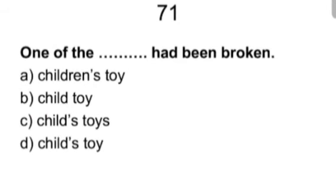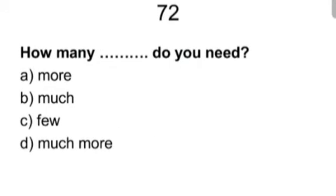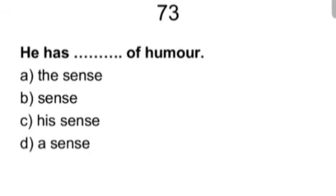Seventy one. One of the blank had been broken. Children's toy, child toy, child's toys, child's toy. Child's toys. Since we are using one of the, so we expect the plural form of toy. Next, seventy two. How many blank you need? Do you need? More, much, few, much more. Answer is more. How many more do you need? Next one, seventy three. He has blank of humor. The sense, sense, his sense, a sense. Answer is he has a sense of humor. A sense.